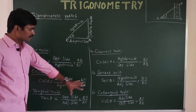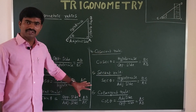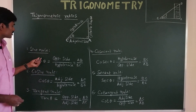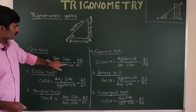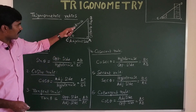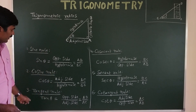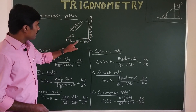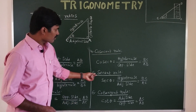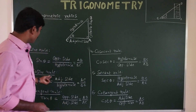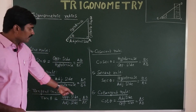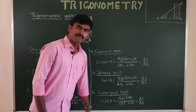To recap the six trigonometric ratios: sin theta equals opposite side by hypotenuse; cos theta equals adjacent side by hypotenuse; tan theta equals opposite side by adjacent side — all relative to the given angle. Cosec theta is the reciprocal of sin theta; sec theta is the reciprocal of cos theta; and cot theta is the reciprocal of tan theta.